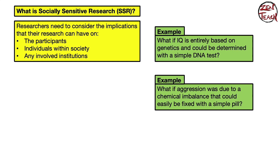Now let's talk about socially sensitive research (SSR). Researchers need to consider the implications their research can have on three areas: the participants, individuals within society, and any involved institutions. For example, if your experiment causes real harm to participants and gets into the media, your university or research institute could face negative press coverage.